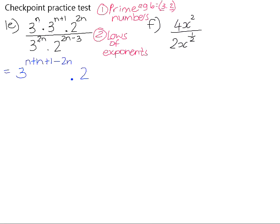Our next base is 2. 2 to the 2n is being divided by 2 to the 2n minus 3. So we need to subtract the whole of 2n minus 3. It's important here that we put that in a bracket because we are subtracting and we're going to need to distribute that negative 1 into that bracket. If we just simplify here, n plus n is 2n, subtract 2n is 0. So we're just left with 3 to the power of 1.